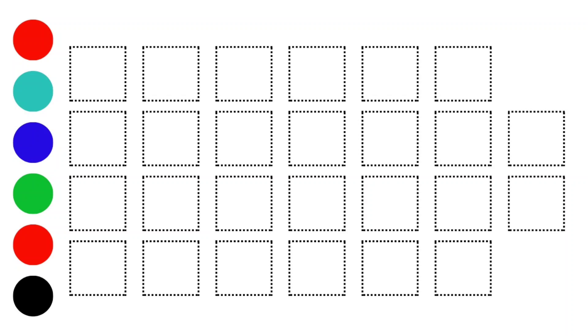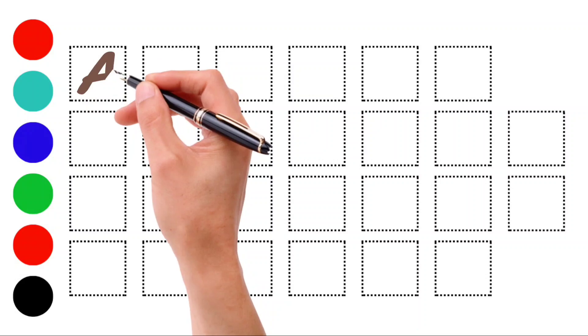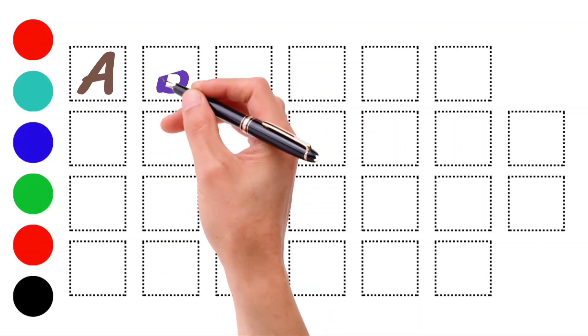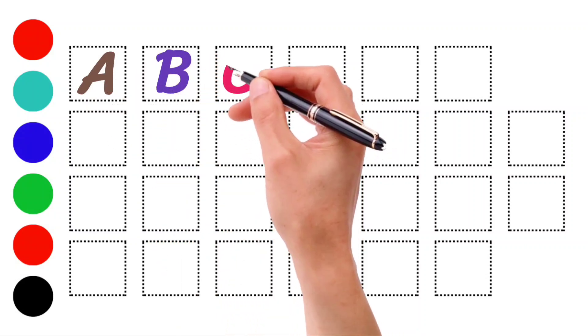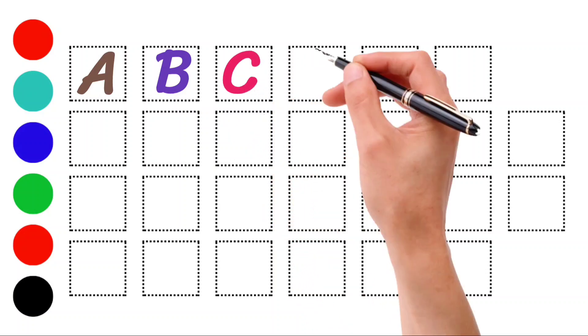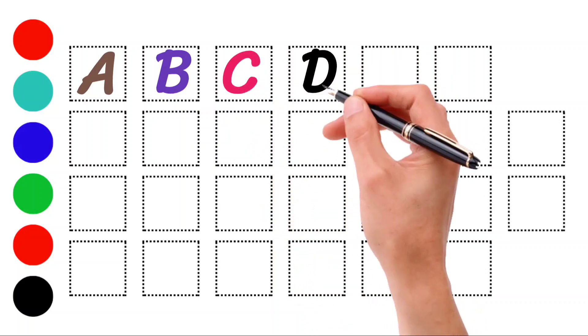let's start. A, A for Ant. B, B for Ball. C, C for Cow. D, D for Doll.